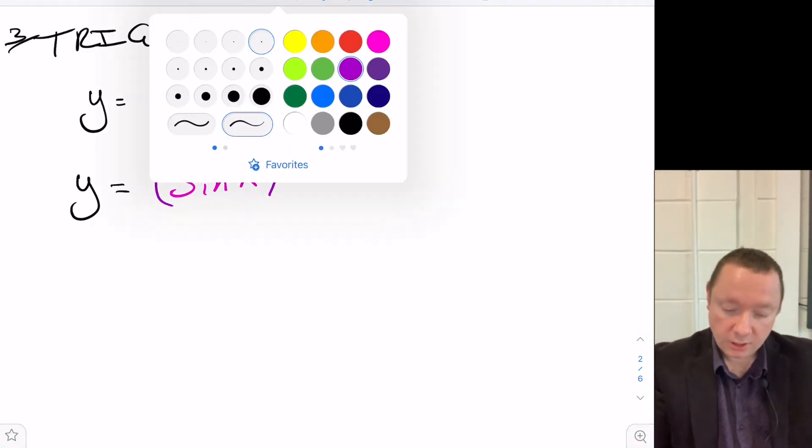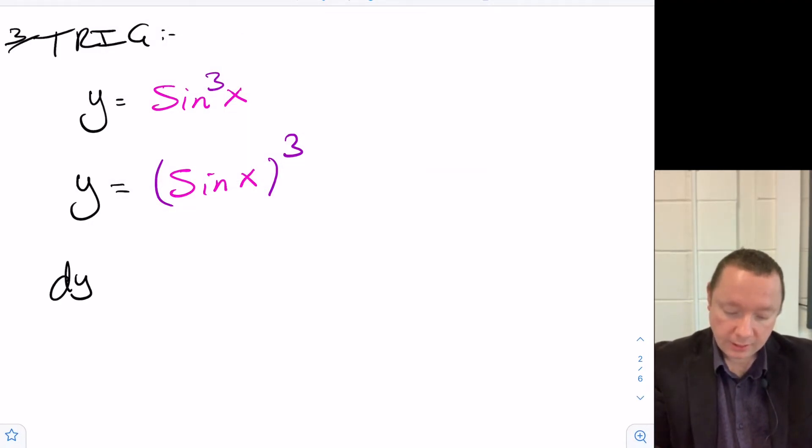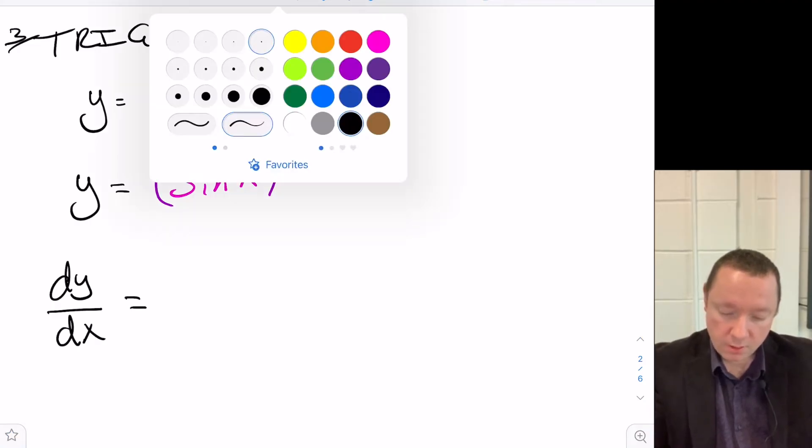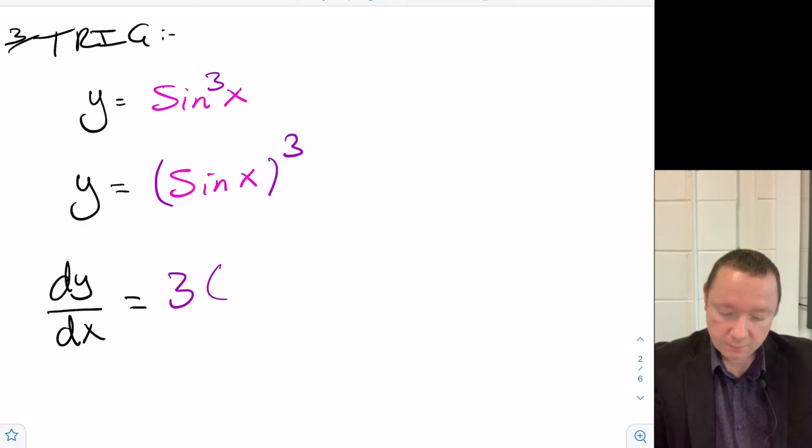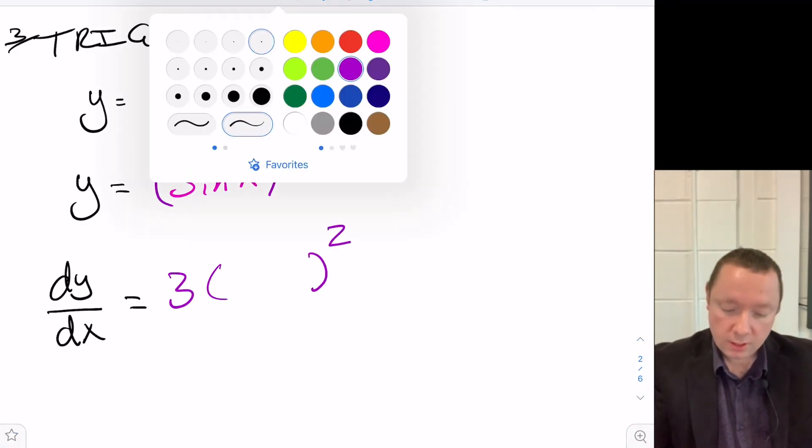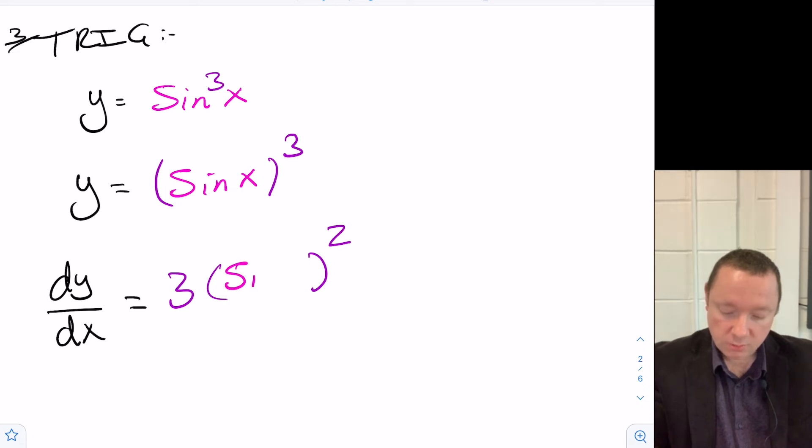So we'd differentiate it in the usual way. dy/dx equals 3 to the front, reduce the power by 1 so that becomes 2, leave the sine x alone. But now I need to differentiate the sine x. Sine, remember, becomes cos. So times by cos x.